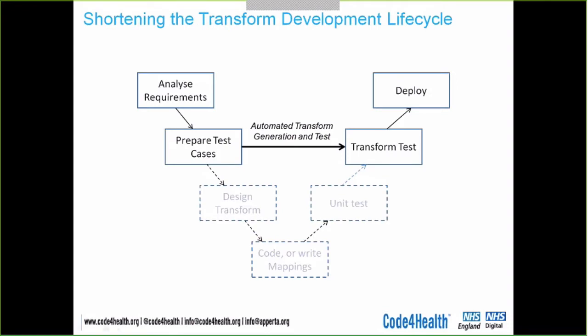This shows the normal V lifecycle for developing any piece of software, including transform software. You start by analyzing your requirements; at some stage you prepare test cases to test that the transform does the job you want. Then you design the transform, code it in whatever language you like, or write mapping in FHIR mapping language, then do unit tests, test the whole transform, and finally deploy it. That's the full V lifecycle for developing a transform, and it's what most people do — most people develop transforms in code.